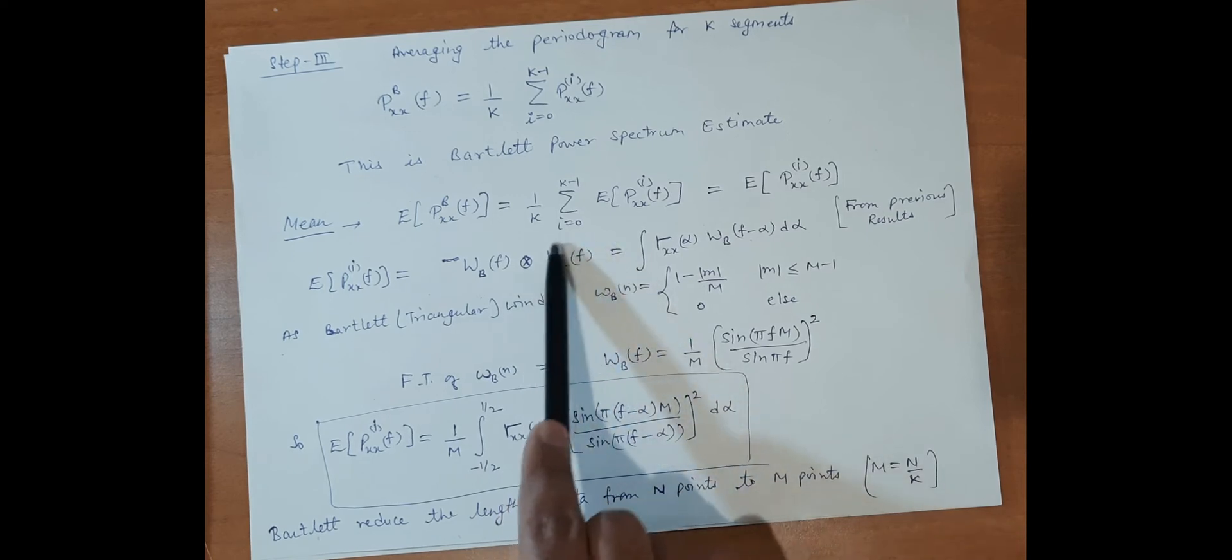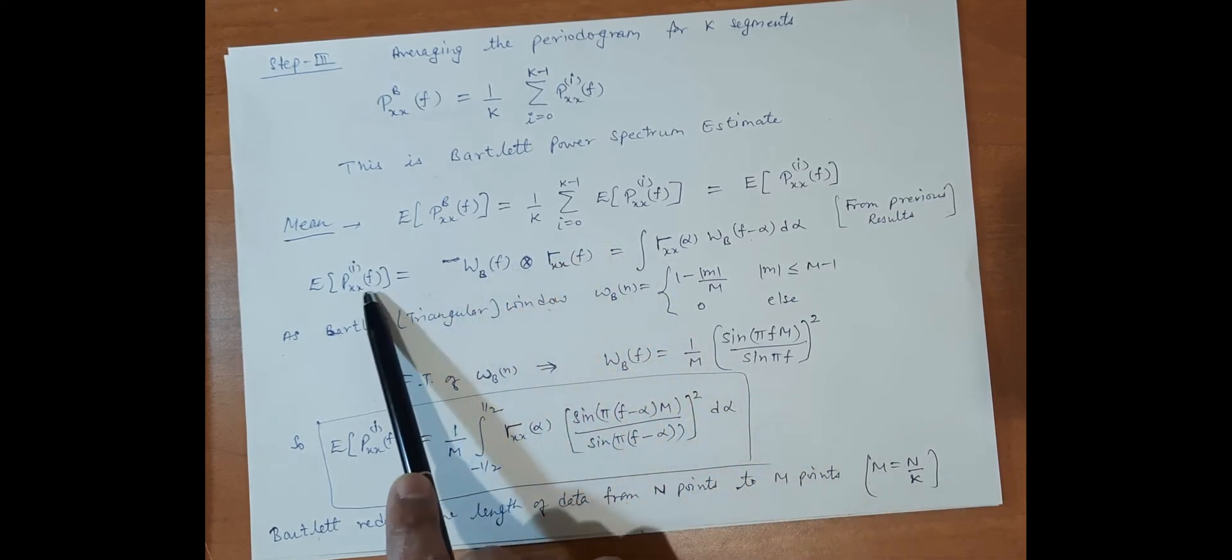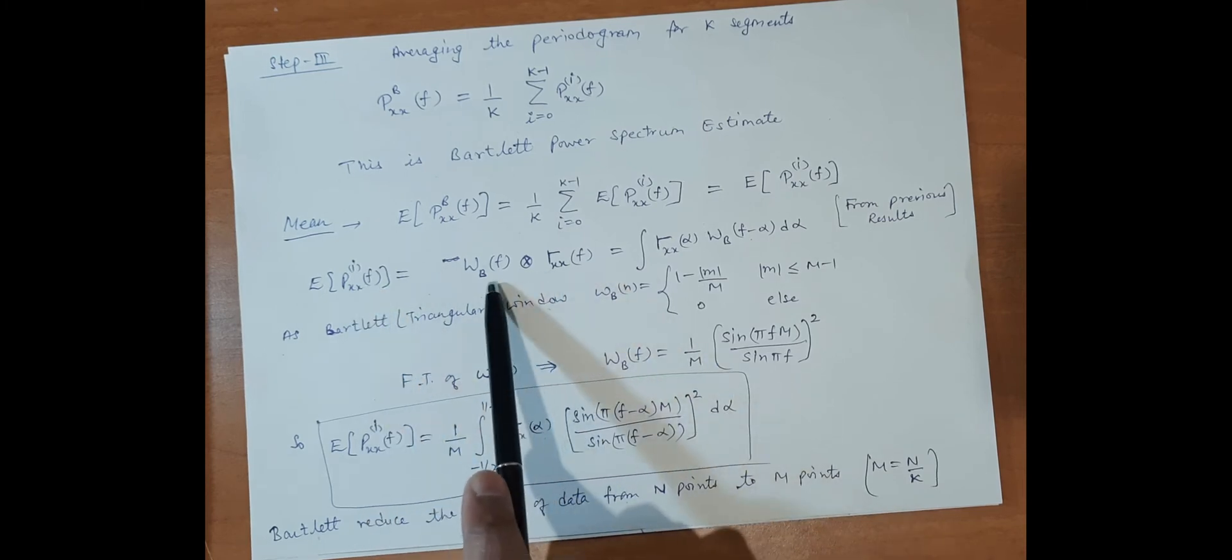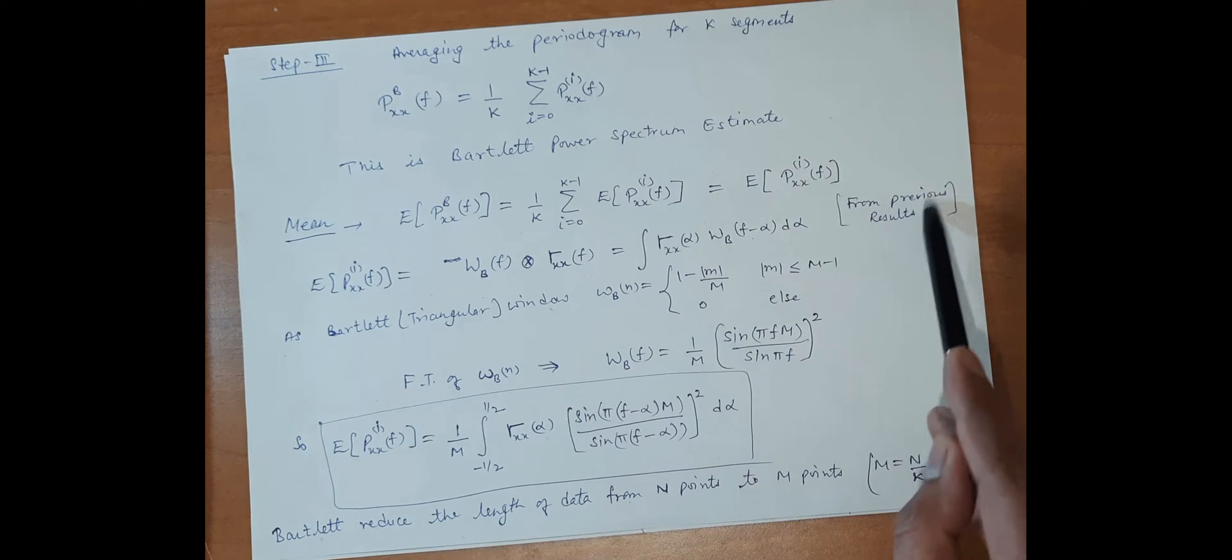The periodogram technique tells us that the Bartlett window and autocorrelation are convolved with each other, which is the power spectrum. This is the result from the periodogram method.